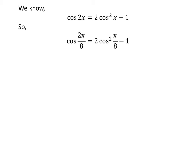Let us plug π/8 in place of x in the above identity. So, cos(2π/8) = 2cos²(π/8) - 1.